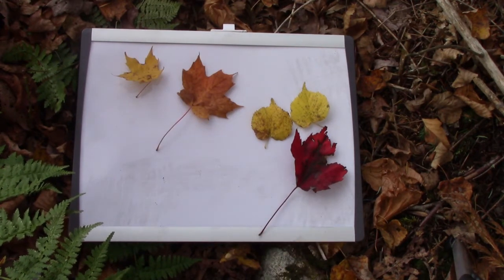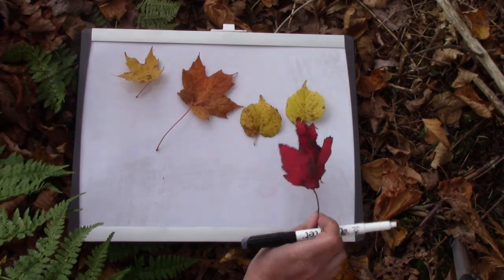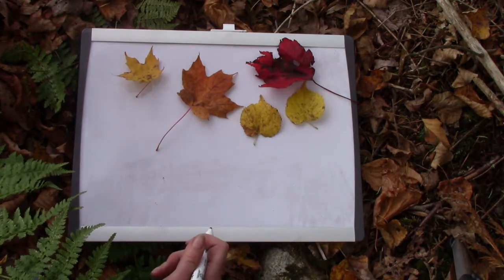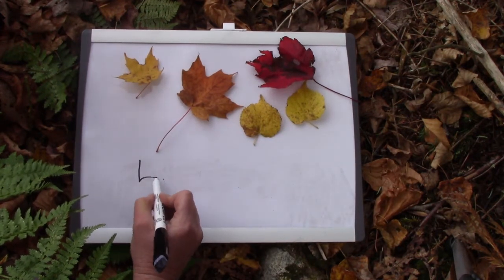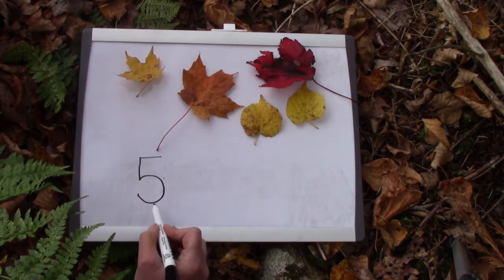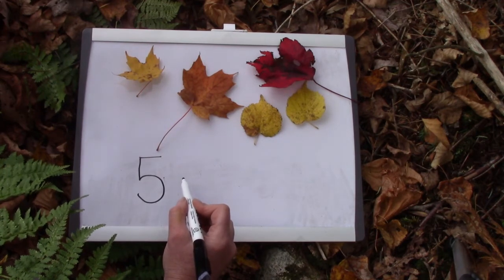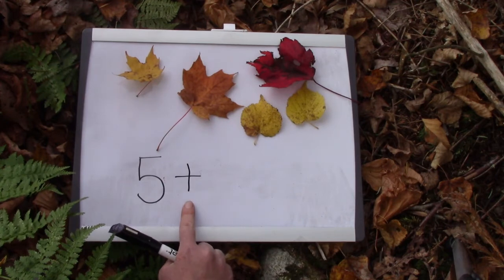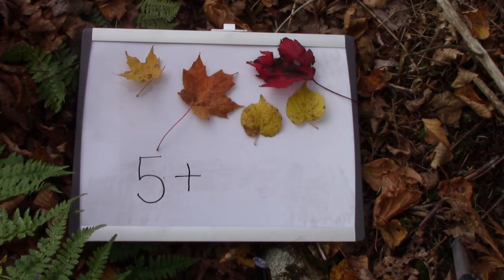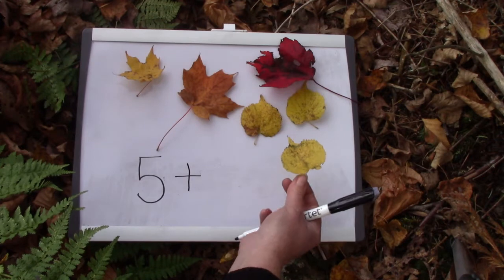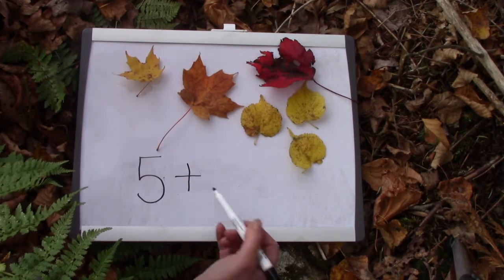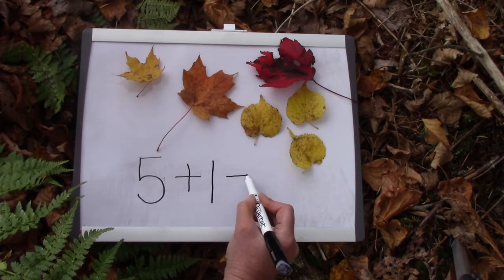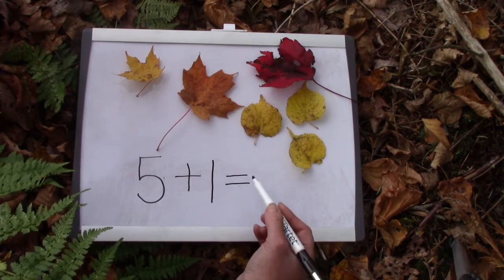Now we have five leaves and I'm going to move this one up to the top — one, two, three, four, five. So we are going to write down five. Five and we're going to add some more, so we are going to put our plus symbol. Five plus one more. Five plus how many? One. Then we're going to do our two straight lines that shows equals.